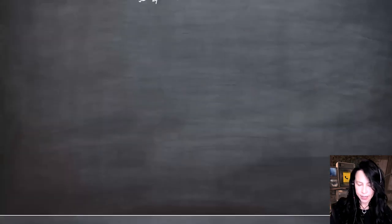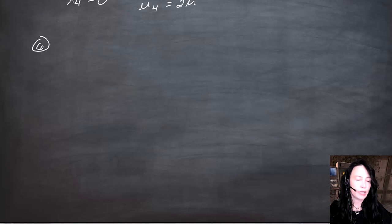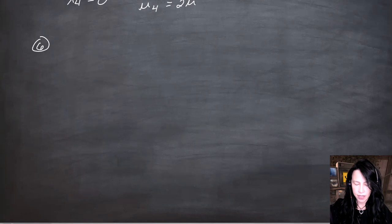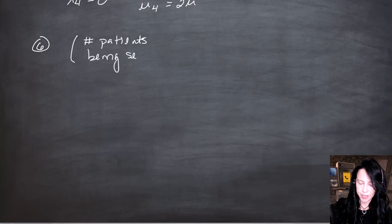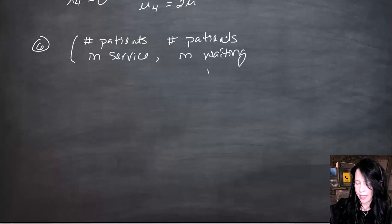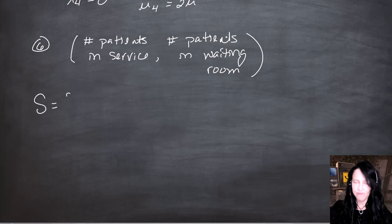The other problem asked about is problem six, the physician problem. You were given actual numerical rates in the announcements because it's hard to do with generic rates. I suggested looking at this as the number of patients in service — meaning with a doctor — and the number of patients in the waiting room. Due to all the different criteria given, the state space takes on five different values.